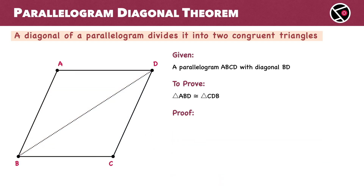All right, let's now move to the second proof. Once again, we have a parallelogram ABCD with diagonal BD. We will prove that triangle ABD is congruent to triangle CDB. For the proof, we start with triangles ABD and CDB.